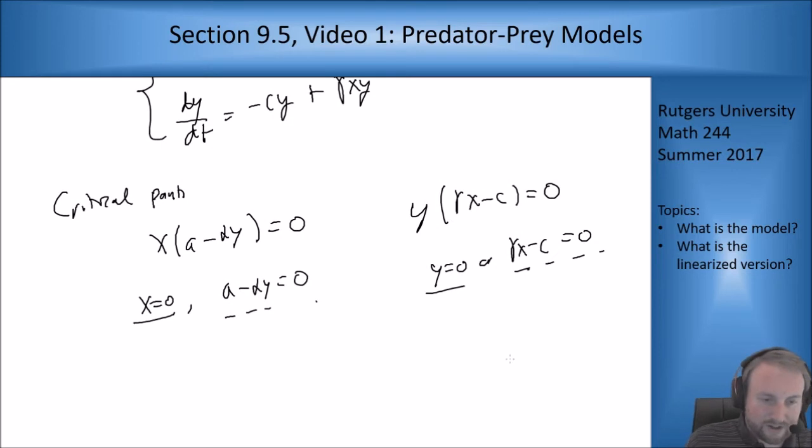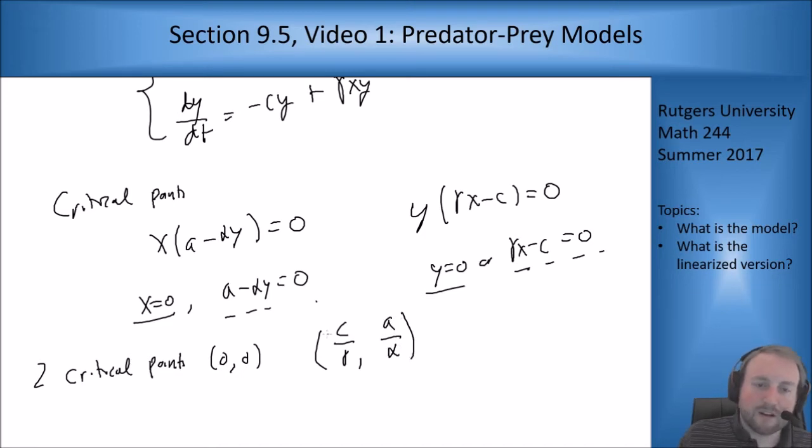So I only get two critical points here. I get the origin and I get the non-zero term where x has to be c over gamma and y has to be a over alpha because if y is a over alpha then this term goes away and if x is c over gamma then this term vanishes.